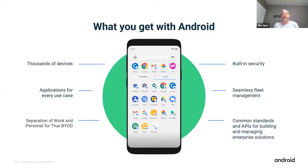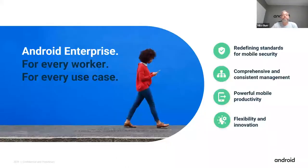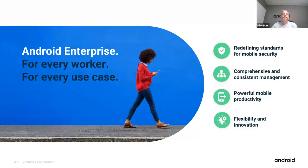Android Zero Touch Enrollment covers almost all Android devices today out of the box. It gives admins a simple and easy way to deploy and enroll devices, and gives users the ability to self-enroll seamlessly and securely. You simply add the device information to the Google Zero Touch console that integrates with whatever EMM you choose. When the device is turned on for the first time or after a factory reset, it will reach out to Google, receive the correct EMM and mini-configuration, and begin a seamless enrollment.